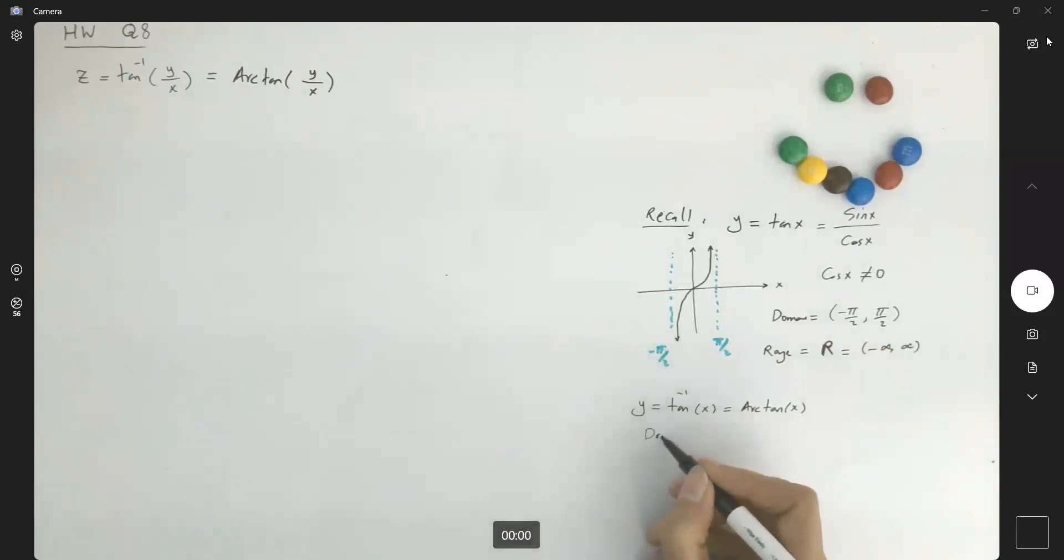The domain of inverse tangent of x is the same as the range of tangent of x, which is just r, negative infinity to positive infinity. And the range of inverse tangent of x is the same as the domain of your tangent function. On one interval, again, I'm emphasizing that I'm working on just one interval. This graph continues on all sides.